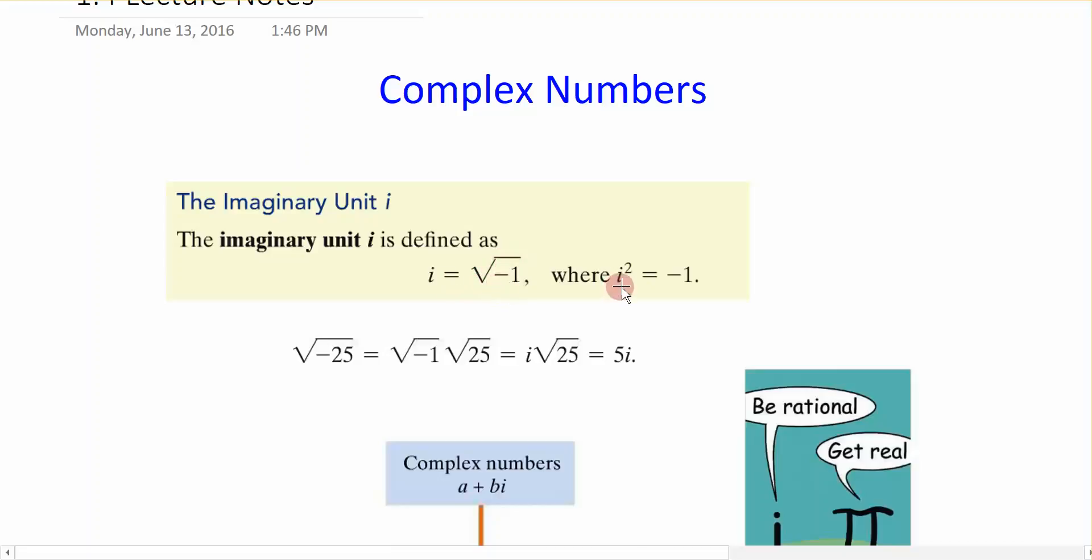i squared is simply negative 1. So if I took the square root of both of these—the square root of i squared and the square root of negative 1—that's how we get i equals the square root of negative 1.